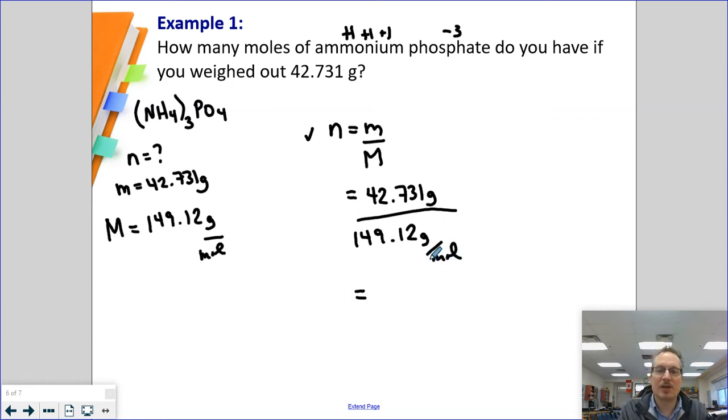Take 42.731 divided by second function answer, because my molar mass is already sitting in the calculator. So 149.12. And I go back to the original question. Five significant digits. My answer has to be in five. So zero point two eight six five five.